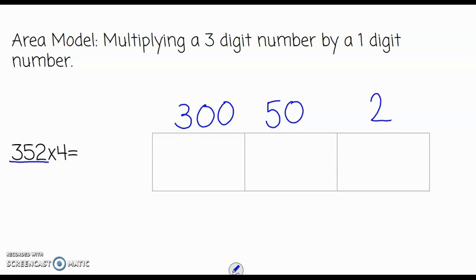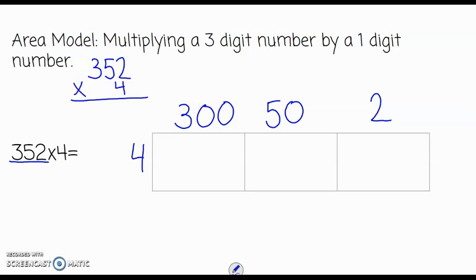Now we haven't changed the number at all — we have just decomposed it into friendlier numbers, and we're going to multiply each of those parts by 4. Just as if we were going to do the standard algorithm, 352 times 4, we would multiply each of those separate place values by the number 4.